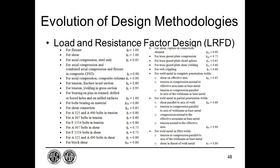Shown here is a partial listing of the various resistance factors phi to be applied to the nominal resistance for various actions and components in steel structures at the strength limit state, as specified in Article 6.5.4.2 of the AASHTO LRFD spec. The resistance factors for flexure and shear that resulted from the calibration process are both equal to 1. Other resistance factors, for example for compression members and connections, are generally less than 1. These resistance factors were generally set at a value 0.05 higher than the corresponding values in the AISC specification.